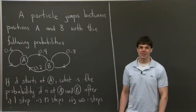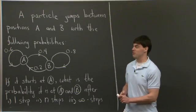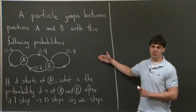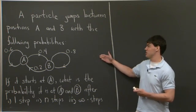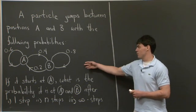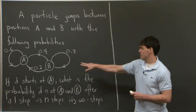Hi, everyone. Welcome back. So today, I'd like to tackle a problem in Markov matrices. Specifically, we're going to start with this problem which almost has a physics origin. If we have a particle that jumps between positions A and B with the following probabilities, I'll just state it.